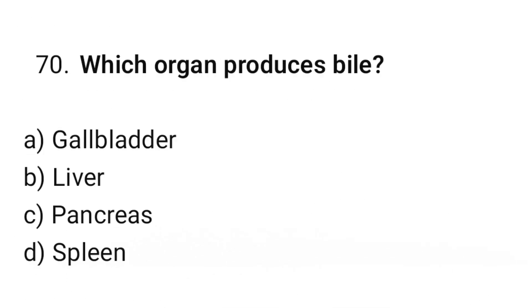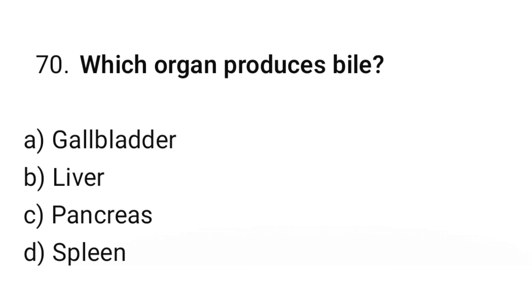Question number 70: Which organ produces bile? The correct option is B. Liver.